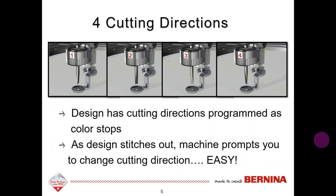Cutwork has four different cutting directions that are programmed into the design as color stops. Just as an embroidery machine will stop to have you change threads, the machine stops so that you can change the dial on the Cutwork tool. As you work around your design with all four of the positions, you will have a cutout object.